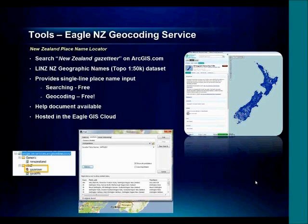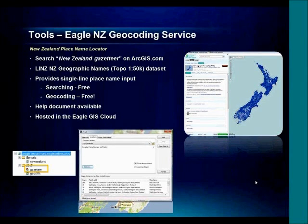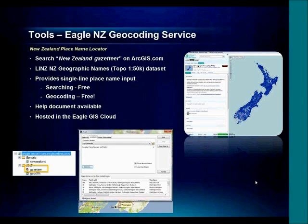The EGLE gazetteer service was built using the LINZ New Zealand Geographic Place Names dataset. So any place names stored in that dataset, you'll be able to search for and geocode using this gazetteer service. If you search for 'New Zealand gazetteer' on arcgis.com, you'll come across the home page for this service. We've also provided a help document which explains more about the gazetteer service and how to use it. Like all our other services, this is also hosted in the EGLE Cloud.